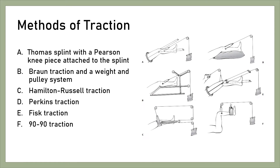The Thomas Splint supports the leg and balanced traction is applied. After four to six weeks, the knee piece is applied and knee mobilization commenced. This was a commonly used traction apparatus.